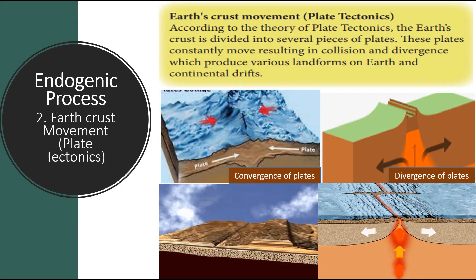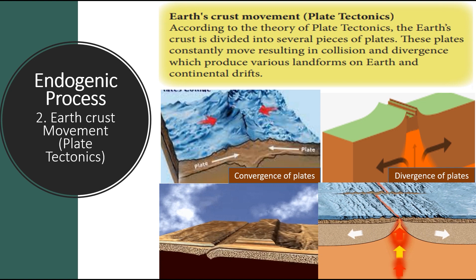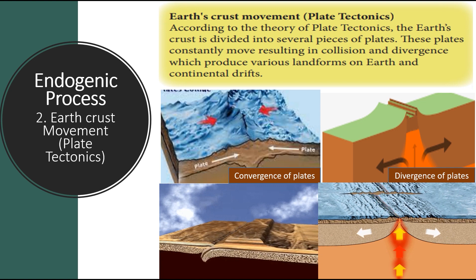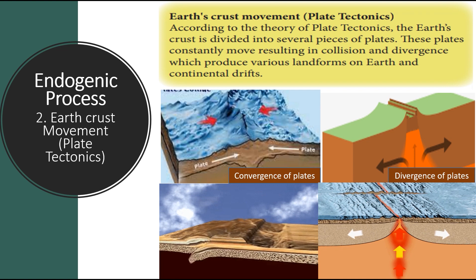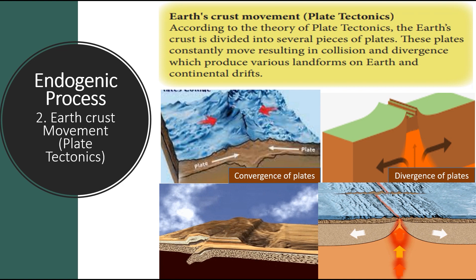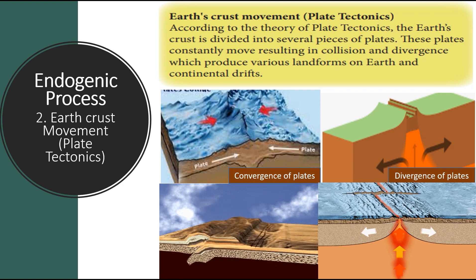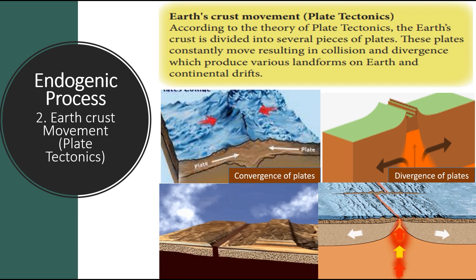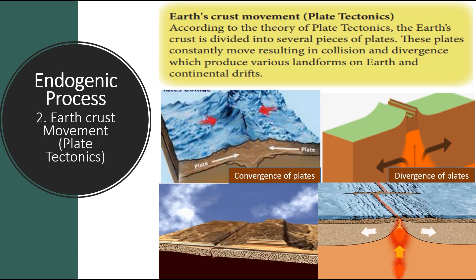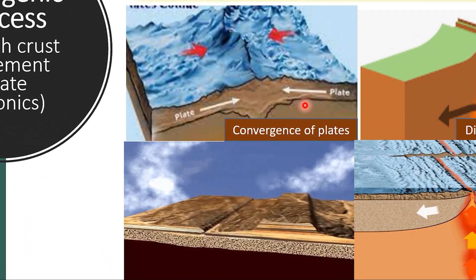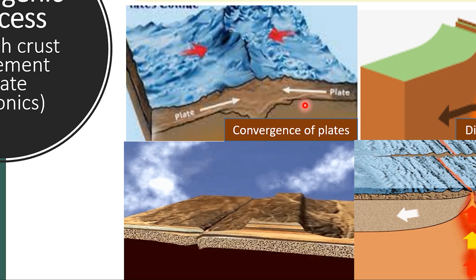The second example of endogenic process is Earth's crust movement, or plate tectonics. According to the theory of plate tectonics, Earth's crust is divided into several plates that constantly move, resulting in collision and divergence, which produce various landforms on Earth including continental drifts. A convergent plate boundary is formed when tectonic plates collide.